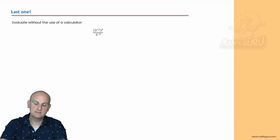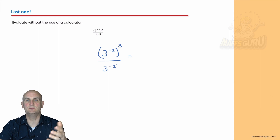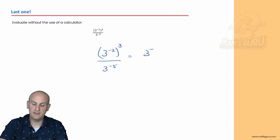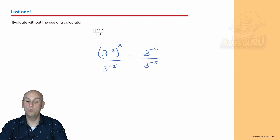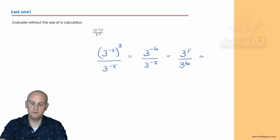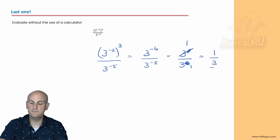Evaluate without using a calculator. We've got powers of powers — we're going to times the powers together. Three to the power of minus six divided by three to the power of minus five. One way: the minus sign flips things. The three to the minus five moves up to become three to the five, and the three to the minus six moves down to become three to the six. Five of them on the top cancel, five on the bottom cancel, giving one on three.